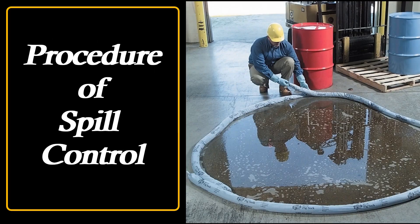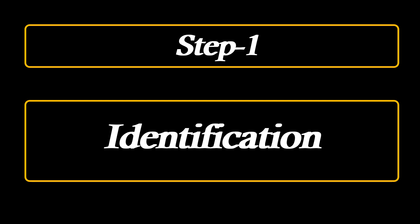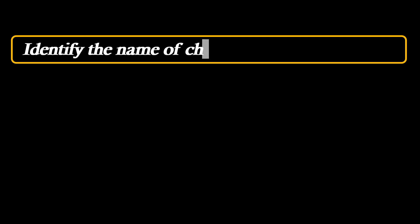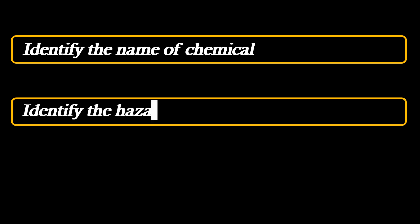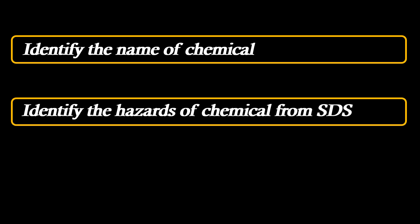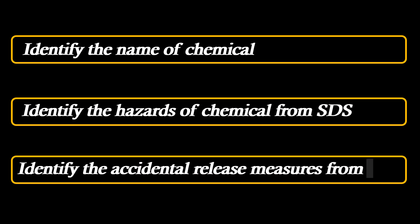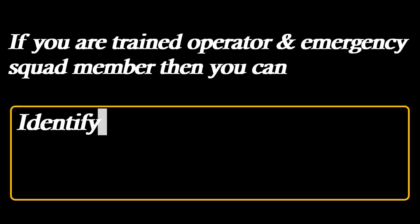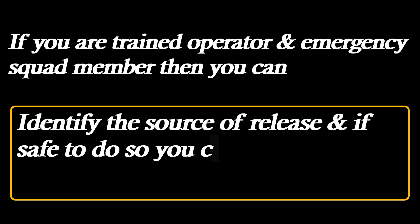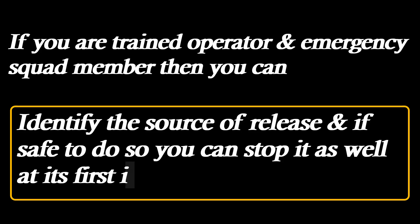Procedure of spill control. Step 1: Identification. Identify the name of the chemical first, then identify the hazards of the chemical from the Safety Data Sheet. Also identify the accidental release measures from the Safety Data Sheet. If you are a trained operator and emergency squad member, then you can identify the source of release, and if safe to do so, you can stop it as well at its first instance.